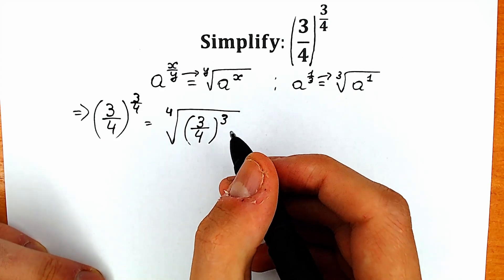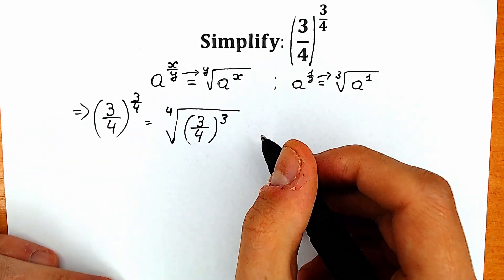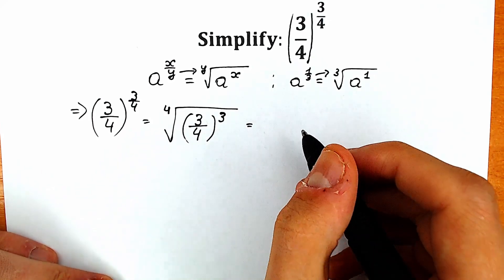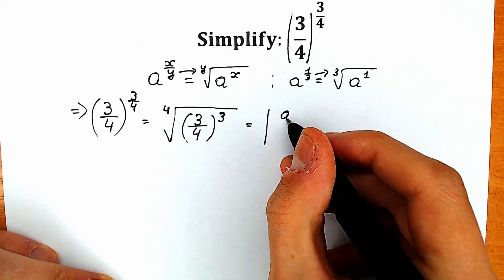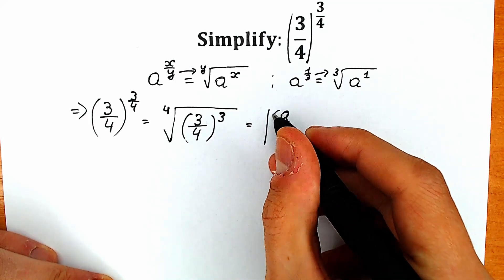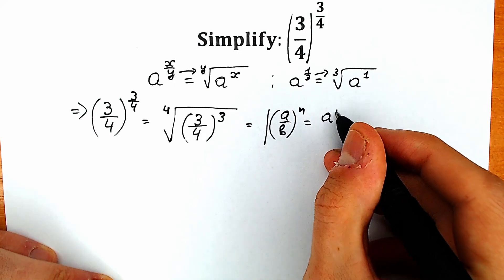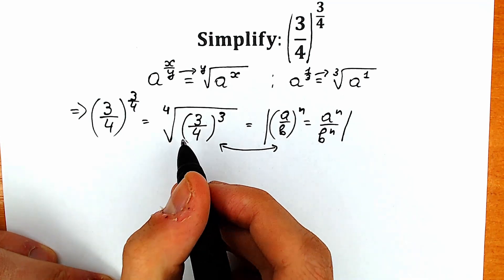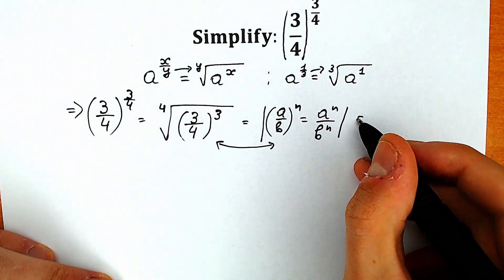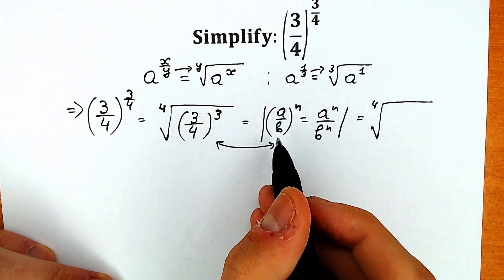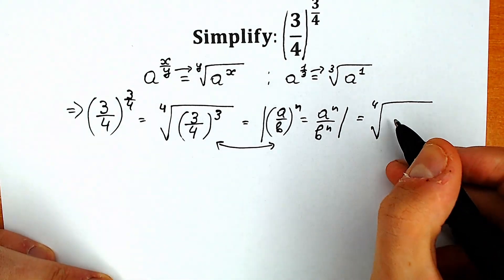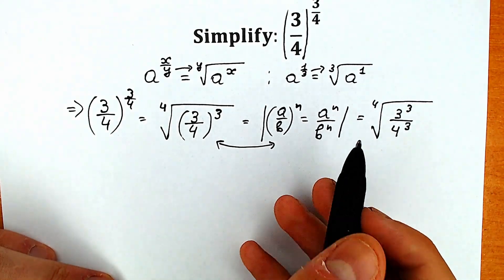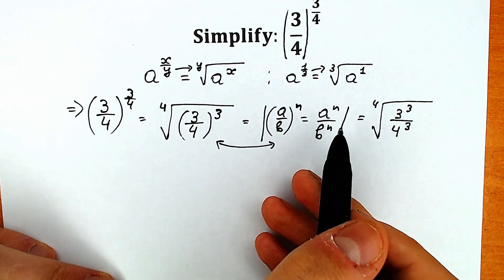I'm going to solve this step by step. We need to simplify the expression inside our root. When we have a over b, raised to the power n, we can split it as a to the power n over b to the power n. Applying this rule inside our fourth root, we are talking about three-cube over four-cube.